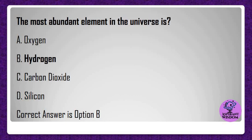The most abundant element in the universe is? A) Oxygen, B) Hydrogen, C) Carbon dioxide, D) Silicon. Correct answer is option B.